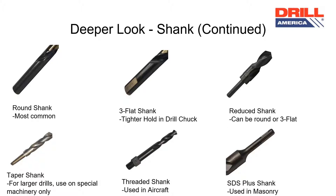A 1 inch drill bit with a ½ inch reduced shank would do the trick. A taper shank is also used for greater size flexibility; however, they can only be used on specialty machines. Threaded shank drill bits have a ¼-28 inch shank and are for use in aircraft applications. SDS Plus shank must be held by an SDS Plus chuck and is used in masonry.